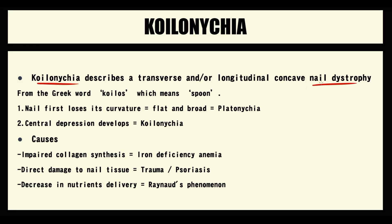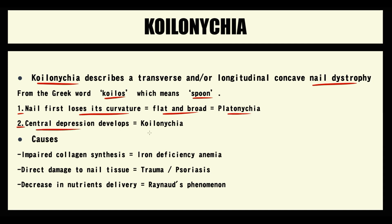Koilonychia is a nail dystrophy. From Greek, koilos means spoon, so koilonychia is a spoon-like deformation of nails. Initially the nail loses its curvature, becomes flat and broad — this nail shape we call platonychía. But with time a central depression develops, and now the flat, broad nail with central depression we call koilonychia.